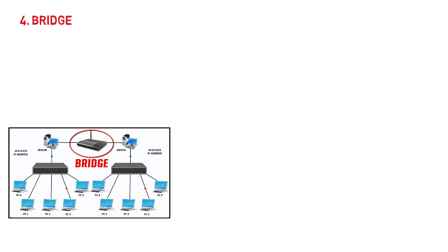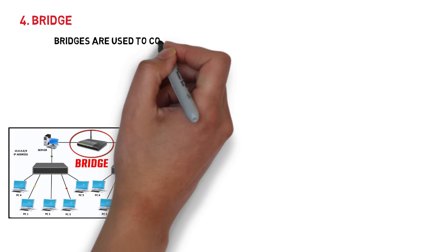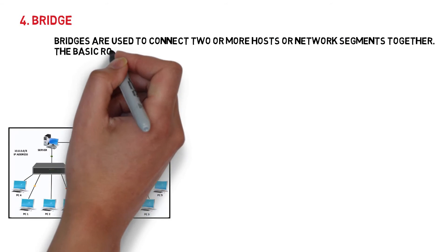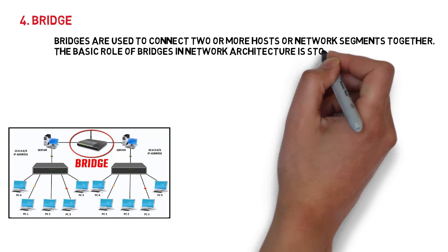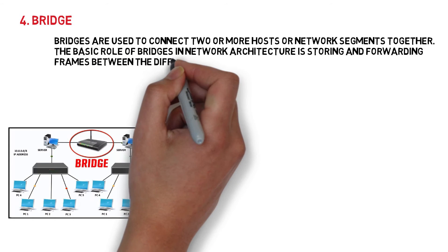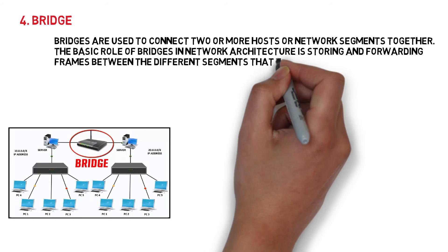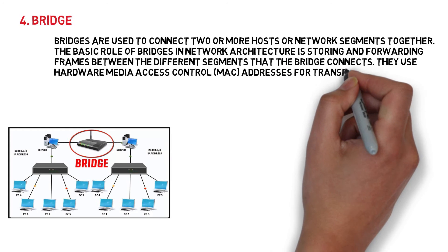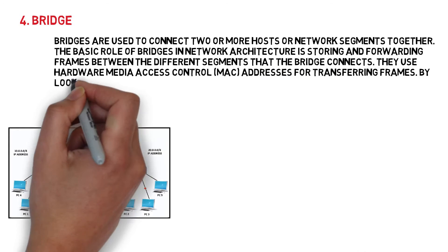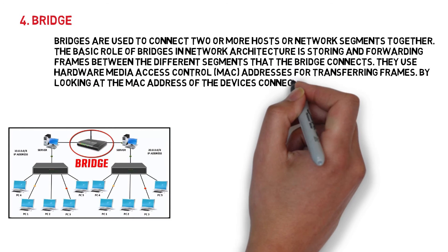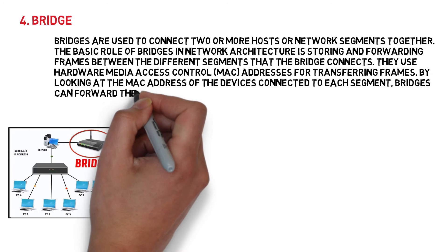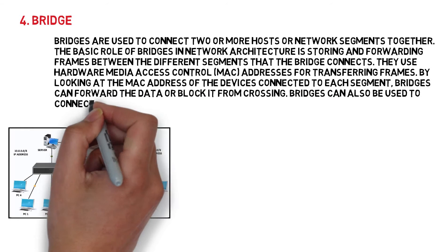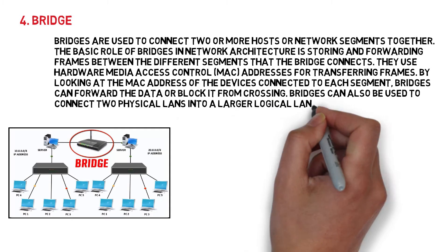4. Bridge. Bridges are used to connect two or more hosts or network segments together. The basic role of bridges in network architecture is storing and forwarding frames between the different segments that the bridge connects. They use hardware media access control (MAC) addresses for transferring frames. By looking at the MAC address of the devices connected to each segment, bridges can forward the data or block it from crossing.